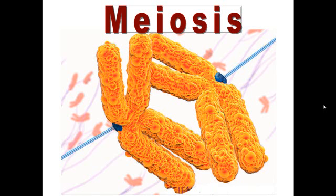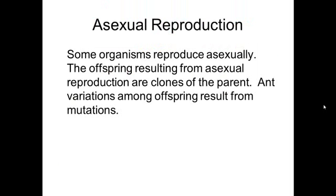Let's start with asexual reproduction, which is reproduction without using a partner. There are many forms of asexual reproduction. All the offspring from asexual reproduction are clones of the one parent.